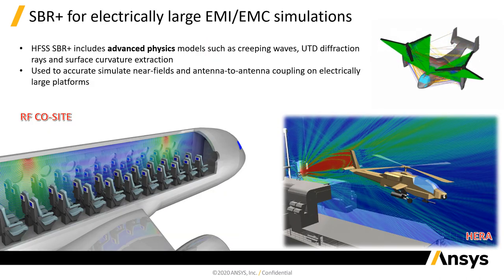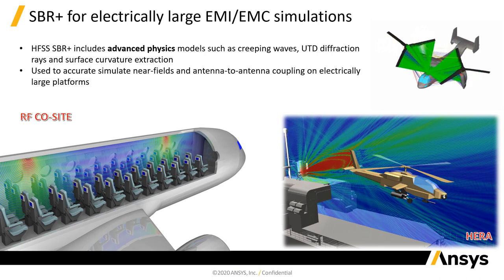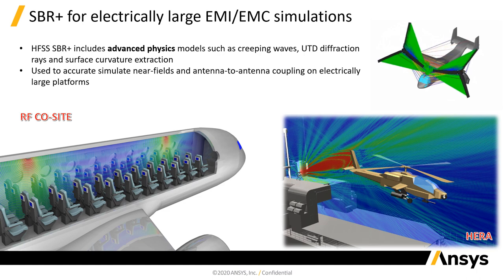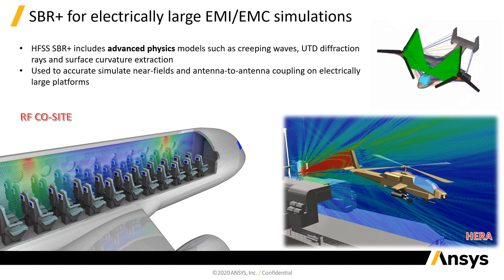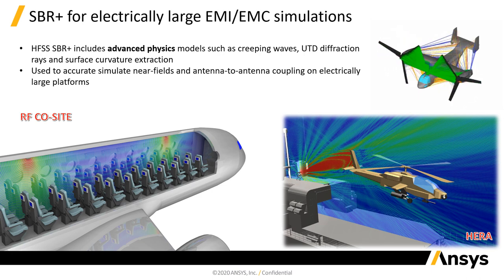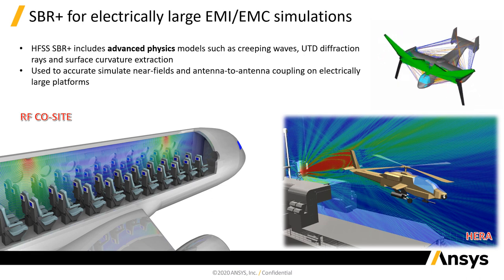If we need to simulate models that are extremely electrically large — physically large and simulated at very high frequency — we need to move from full-wave to asymptotic techniques like Shooting Bouncing Rays Plus. The greatest advantage of HFSS is that we leverage SBR+ technology with advanced physics models such as creeping waves, UTD, and PTD that improve the results and accuracy of Shooting Bouncing Rays.